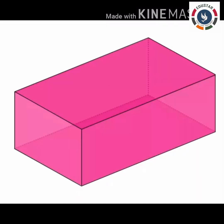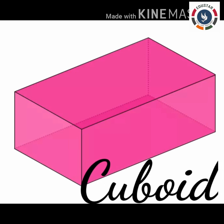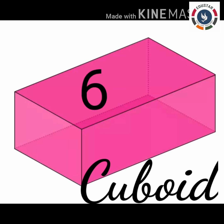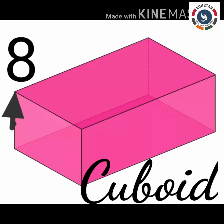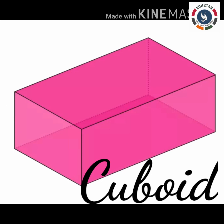What shape is this? Yes, this is a cuboid. It's like a box. It has six faces of different sizes. It has twelve edges and eight corners. It can slide because it has flat surfaces. Let's see examples of cuboid.